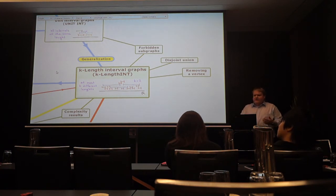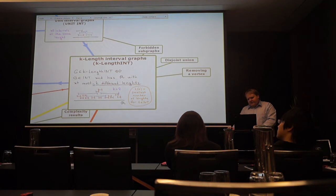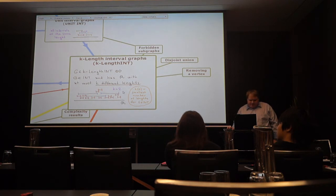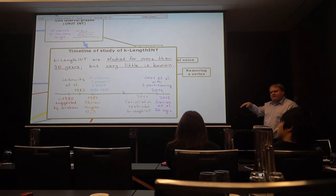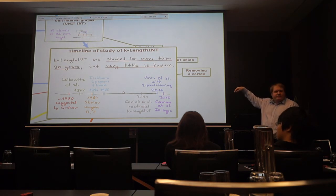The idea is that instead of one length I will allow at most k lengths. So a representation using at most k different lengths of intervals. So this is example of a two length interval graph. And so if you go a little bit in the timeline it goes 30 years back. And actually it's interesting that we were studying these problems. I came up with this question completely independently. I didn't know about this line of research.